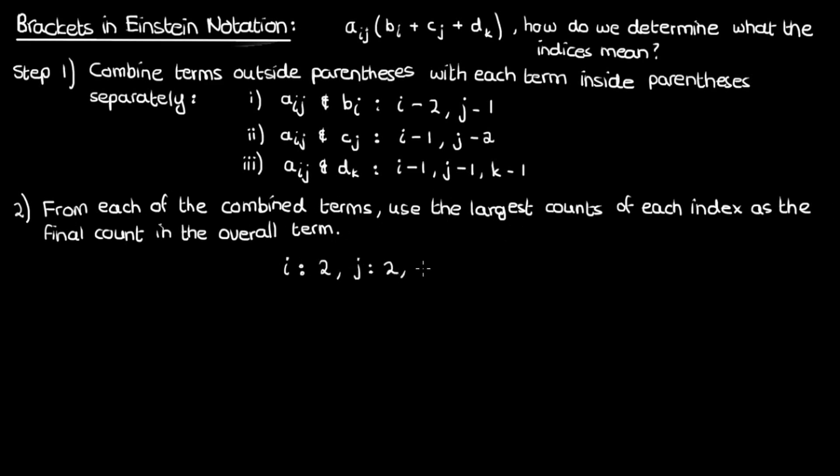The largest count of j is 2 and occurs in the second combination, while the largest count of k is just 1, which occurs in the third combination. What does this mean?